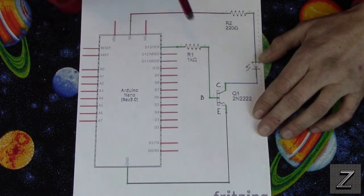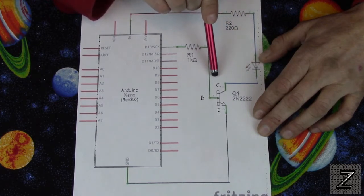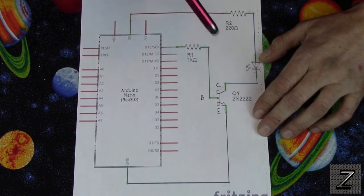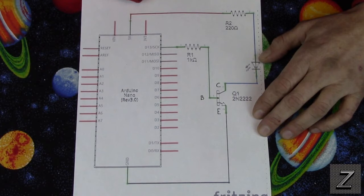And you bring that into the collector of your transistor. Then from the emitter you go to your common ground. Not too hard, is it? Pretty simple.